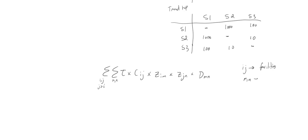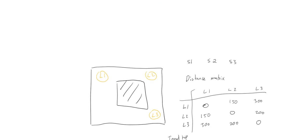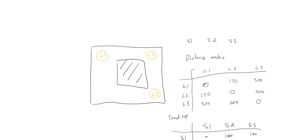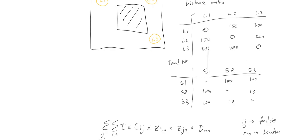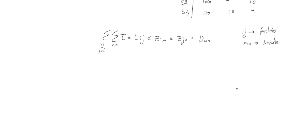So where do we start? The first step is we have to start with a particular allocation of supply points to locations. For the sake of demonstration, let's use this allocation: S2 is allocated to location one, S3 is allocated to location two, and S1 is allocated to location three.